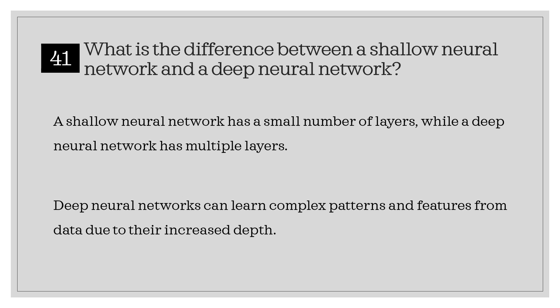What is the difference between a shallow neural network and a deep neural network? A shallow neural network has a small number of layers, while a deep neural network has multiple layers. Deep neural networks can learn complex patterns and features from data due to their increased depth.